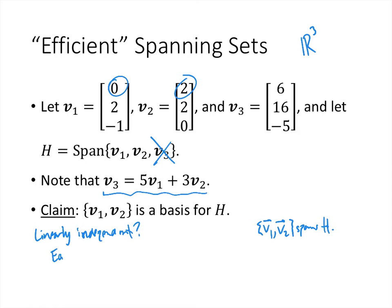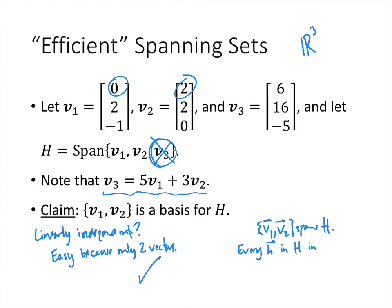When a set has more than two vectors, showing linear independence usually requires row reducing a matrix. But with two vectors, we just need to confirm neither is a multiple of the other. Now, why does {v₁, v₂} span H? We know that {v₁, v₂, v₃} spans H, so every element h in H is in the span of those three vectors: h = a₁v₁ + a₂v₂ + a₃v₃ for some scalars a₁, a₂, a₃.